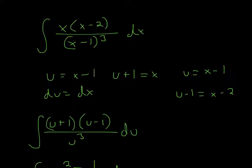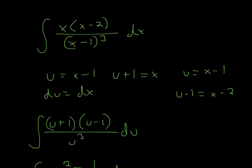u equals x minus 1, so we get u cubed here. Now for x minus 2, we take the same equation and subtract 1 from each side, so it becomes u minus 1 — meaning u minus 1 equals x minus 2. Now we can substitute u minus 1, and now we have all u's.